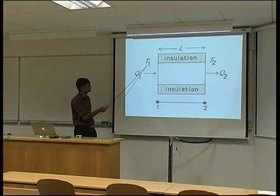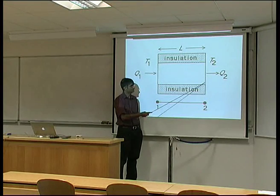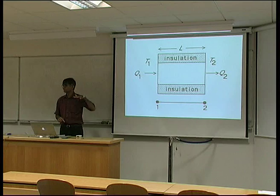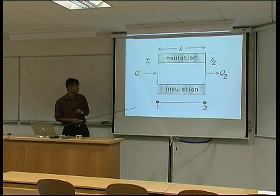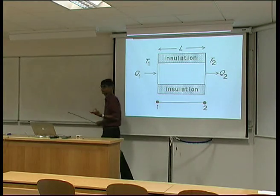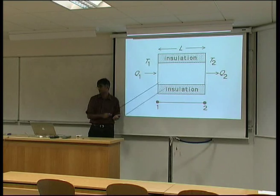The temperature on this surface is maintained at T1 and is maintained at T2 over here. Q1 is the amount of heat that's flowing into the bar, and that we classify as positive. Q2 is the amount of heat that is leaving the bar. And there are no sources or sinks of heat inside the bar itself.